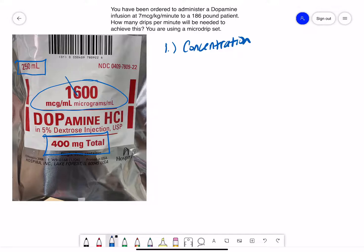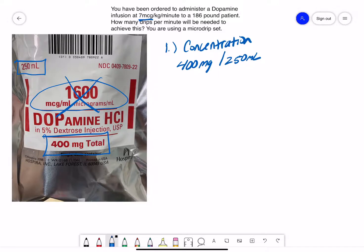And you will be expected to figure out what the concentration of that medication is just from that information. So we're going to act like this 1600 micrograms per ml information isn't given to us. So we have 400 milligrams of dopamine and 250 milliliters of volume. Well, the question is asking us to give a dose based on micrograms, not milligrams.